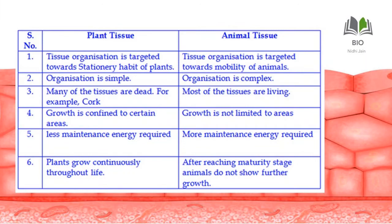There is a difference between plant tissue and animal tissue. Plant tissue organization is targeted towards the stationary habit of plants — plants cannot move from one place to another, they are stationary, so their tissue organization is accordingly. In animals, tissue organization is targeted towards mobility. Plant tissue organization is simple, but animals being complex, their tissue organization is also complex. In plants, many tissues are dead — for example, cork, the outer covering of a tree.